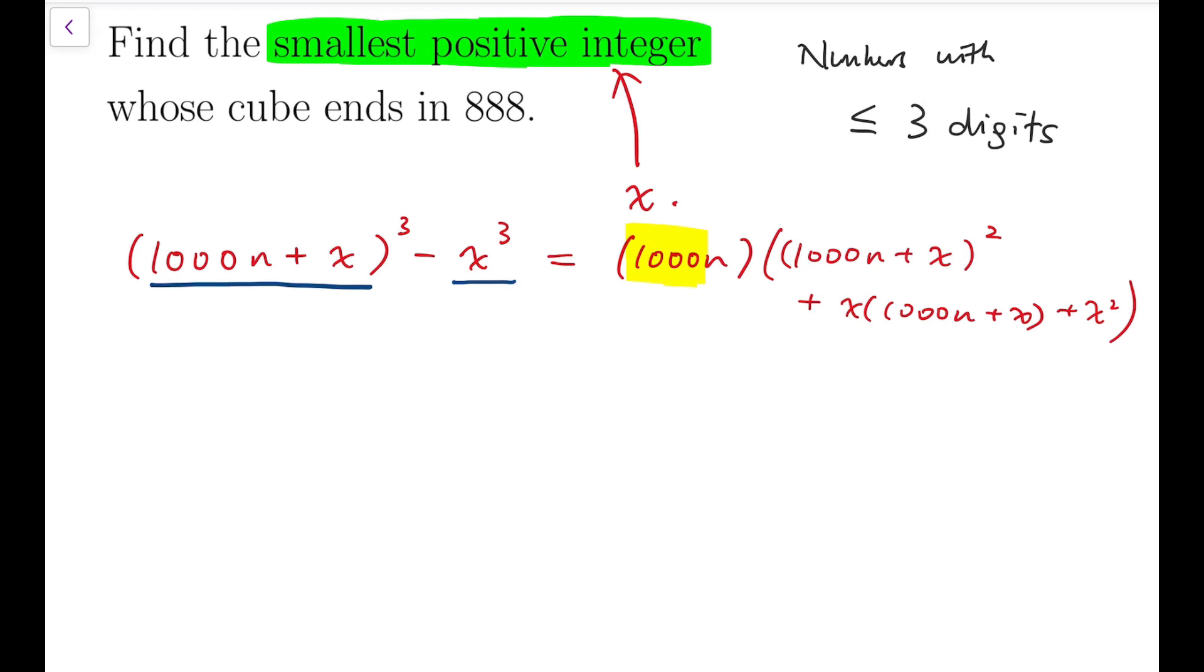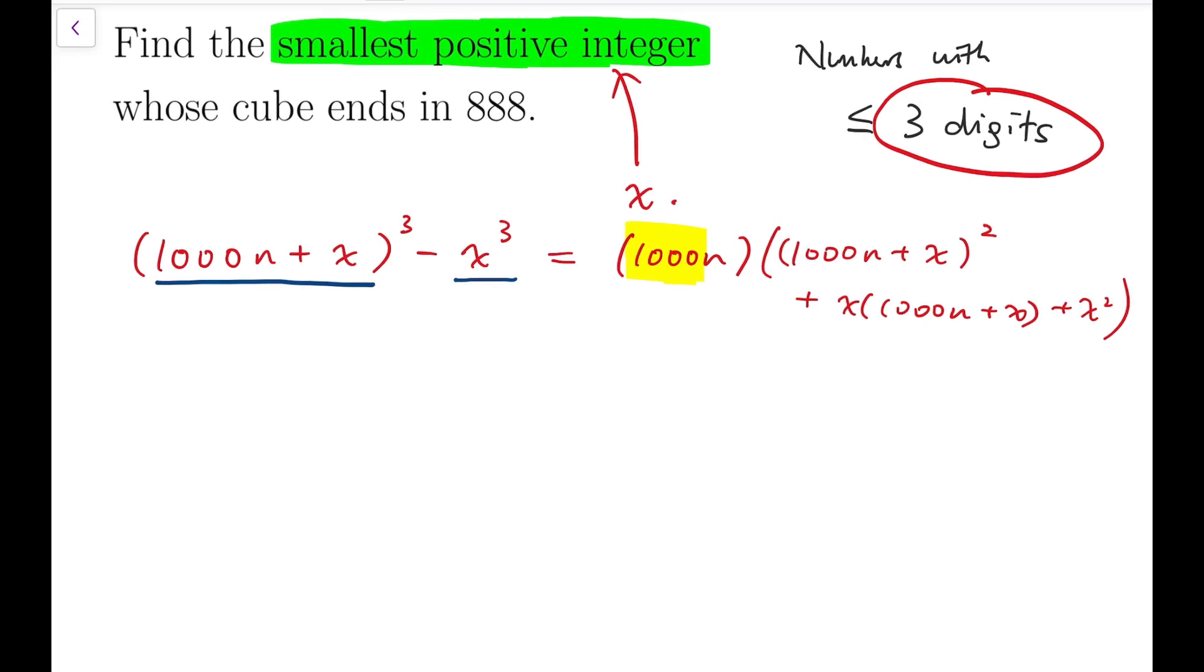So that means, if I were to find not just some positive integer whose cube ends in 888, but the smallest one, then we know that we can only focus on numbers that are at most three digit numbers. So it's either one digit, two digits, or three digits, but we know that this is very likely for our final answer to be some number that contains three digits.